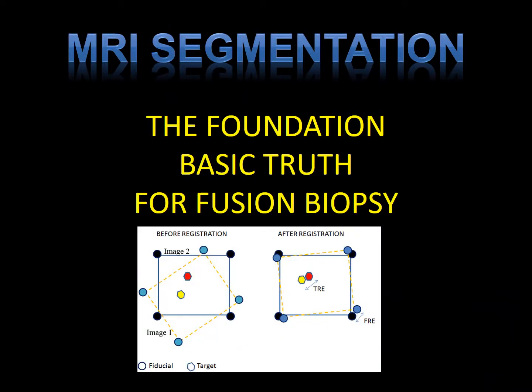In summary, MRI segmentation is the foundation — the basic truth we base our biopsy on — because the MRI has a higher sensitivity and specificity than what we obtain with transrectal ultrasound. I'd like to take you back to what surface rendering was: lining up those triangles or shapes. Imagine you had poor segmentation. What if you got rid of some of the fiducials? You could place the triangle in two positions, one in the opposite direction of what you would have expected. This reflects how poor segmentation can change the matching of the two data sets, and inaccurate or fewer fiducial points will cause your segmentation to be suboptimal.